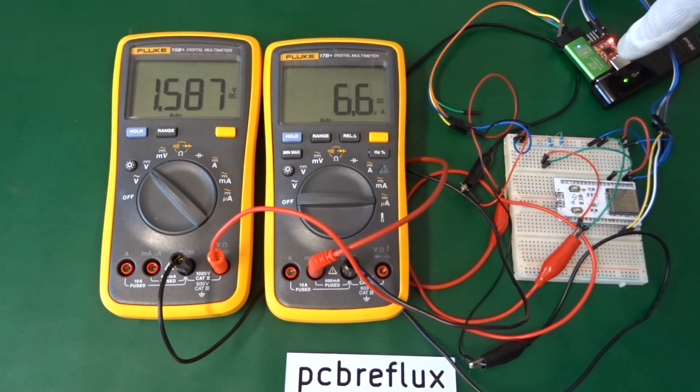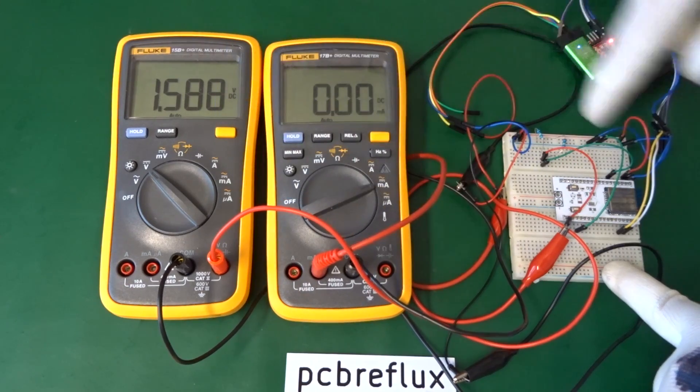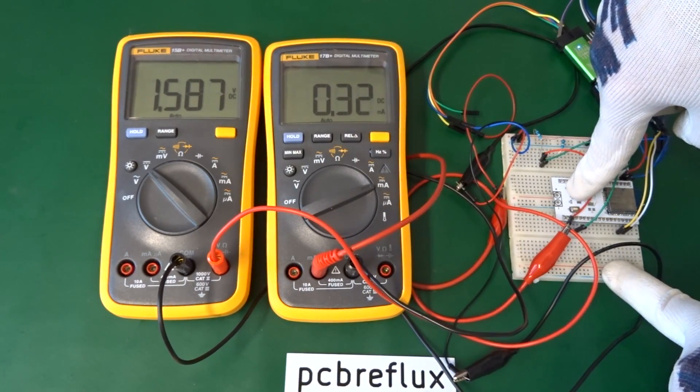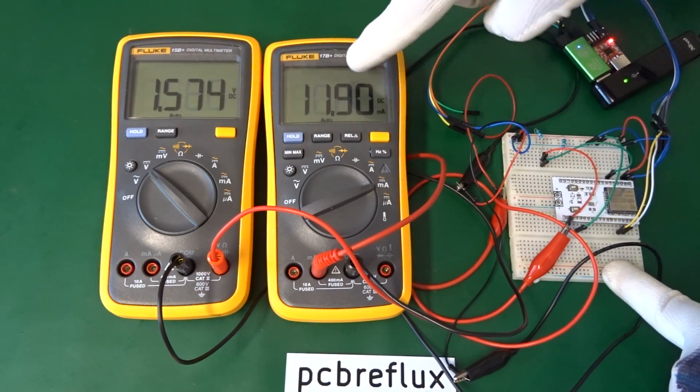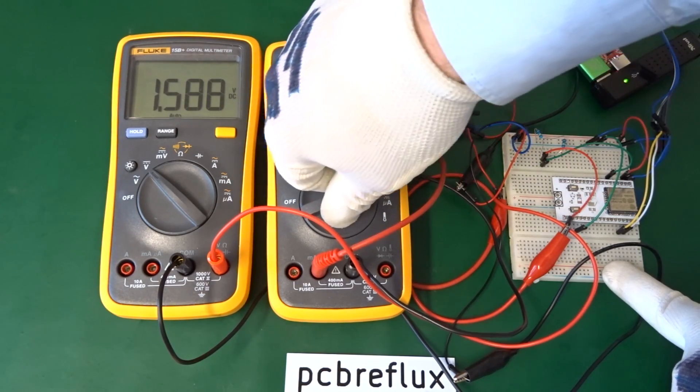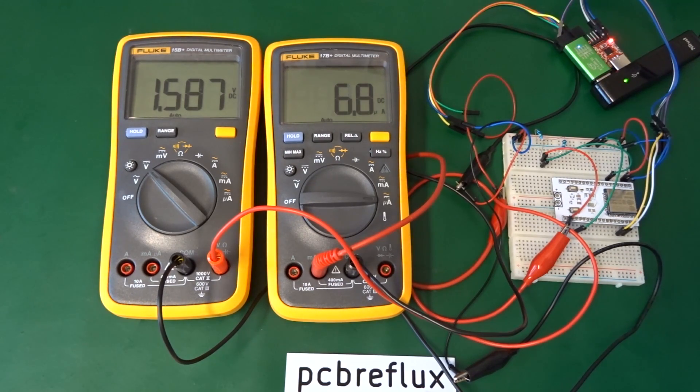And GPIO pin 35 is used as an ADC. So now let's reset our ESP32. And we see at start, we measure some milliamps through the ESP32, but then in deep sleep mode, we get around 7 to 10 microamperes.